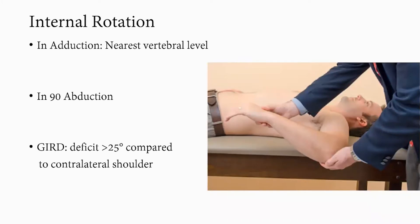Glenohumeral internal rotation deficit (GIRD) is defined as a deficit of more than 25 degrees when compared to the contralateral shoulder.